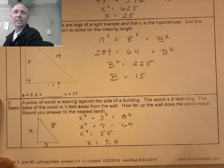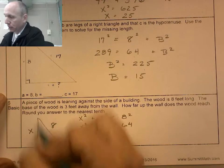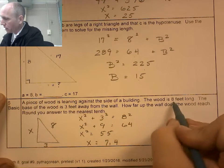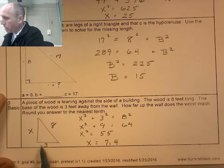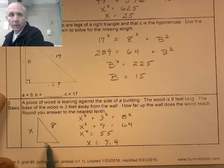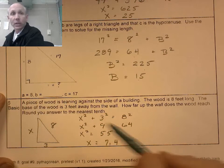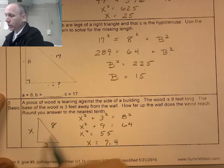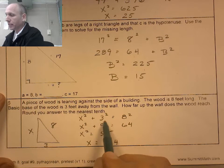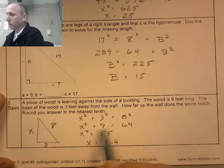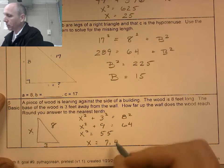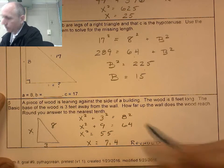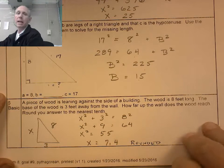A piece of wood is leaning against the side of a building. So here's the building. There's the piece of wood leaning against it. And I know that the wood is 8 feet long. And that the base of the wood is 3 feet away from the wall. So 3 feet there. I'm going to use Pythagorean theorem and find this. So x squared plus 3 squared equals 8 squared. x squared plus 9 equals 64. Had to take the square root of 55, and that was 7.4.